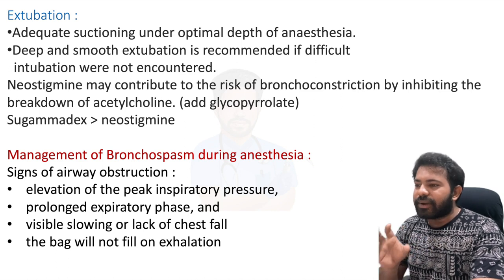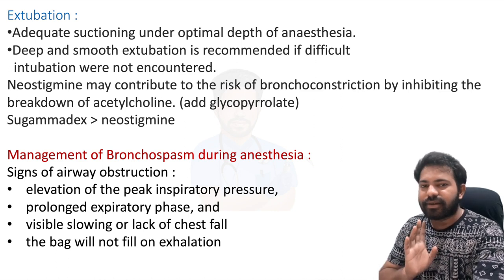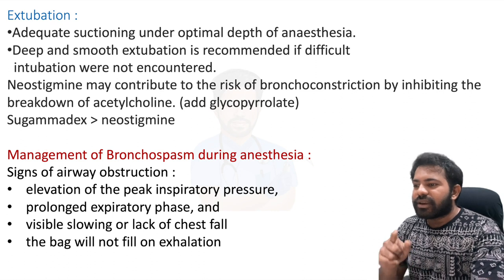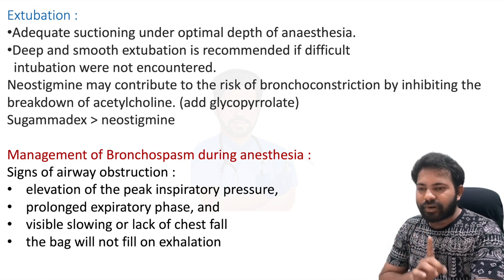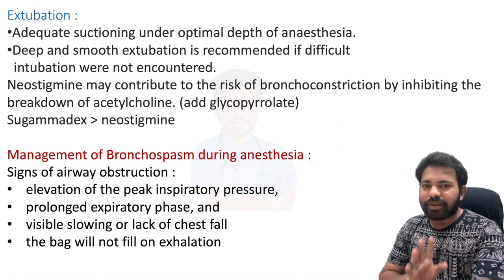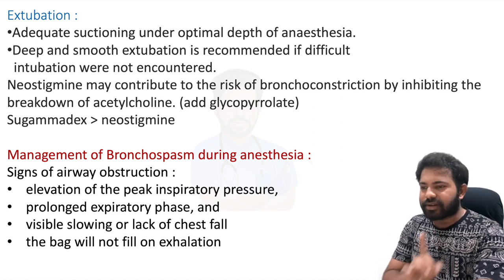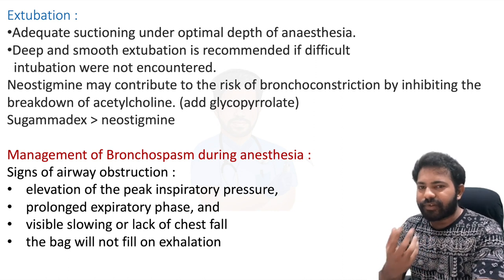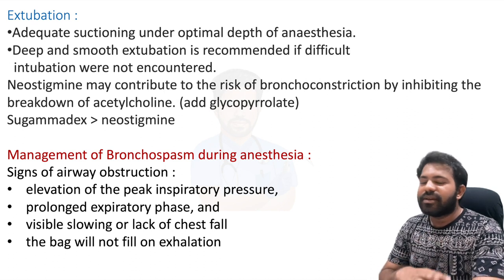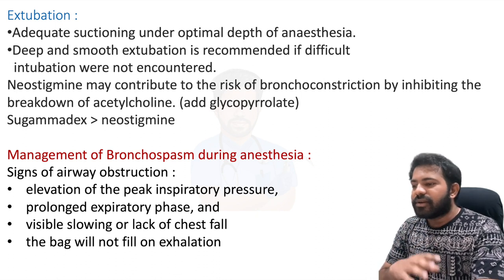For extubation, perform adequate suctioning under optimal depth of anesthesia — do not suction in lighter planes as this triggers bronchospasm. Deep and smooth extubation is recommended if difficult intubation was not encountered. Neostigmine may contribute to bronchoconstriction by inhibiting breakdown of acetylcholine, but atropine or glycopyrrolate given alongside will blunt these effects. Sugammadex is theoretically a better choice than neostigmine for reversal of rocuronium or vecuronium in asthmatic patients.